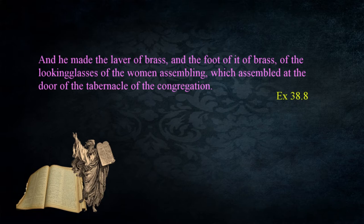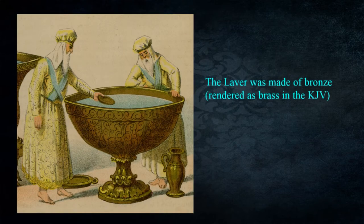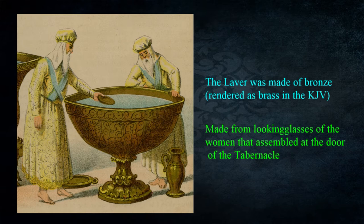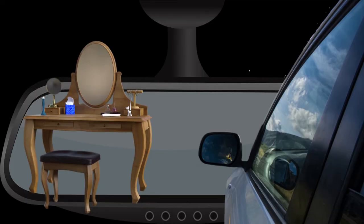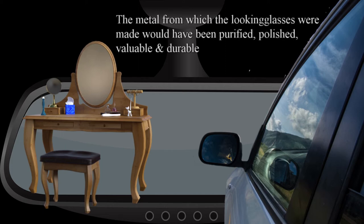One more bit of information helps us understand what the laver may have looked like. Exodus 38:8 states: 'And he made the laver of brass and the foot of it of brass of the looking glasses of the women assembling, which assembled at the door of the tabernacle of the congregation.' We don't have any information about its size or dimensions, but we have a significant addition: it was made from the looking glasses — mirrors — of the women who assembled at the door of the tabernacle.